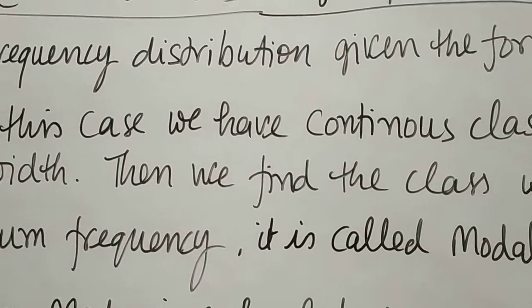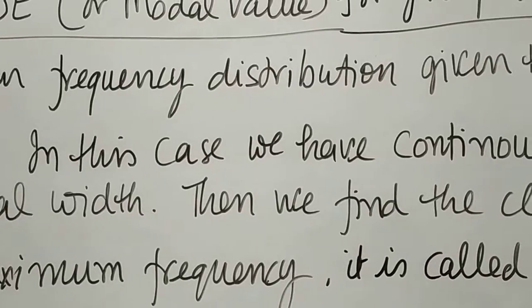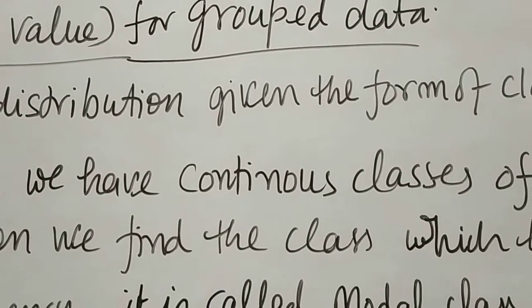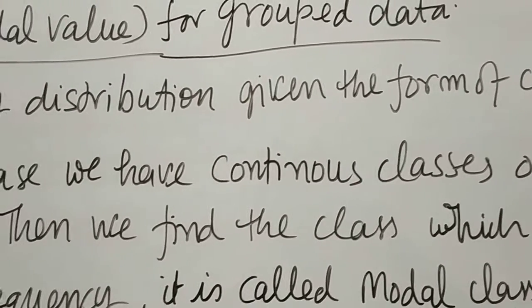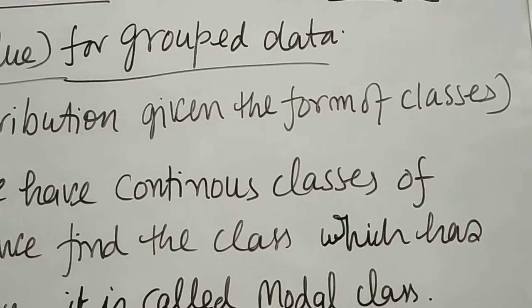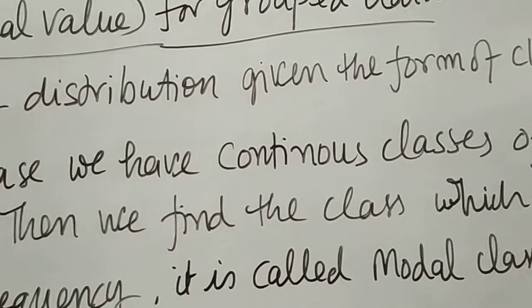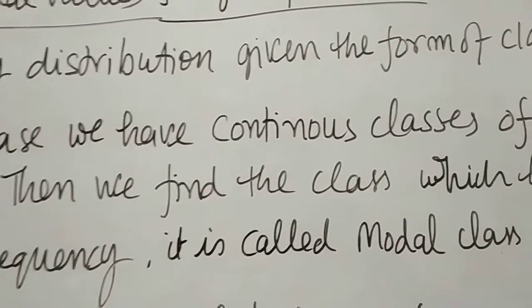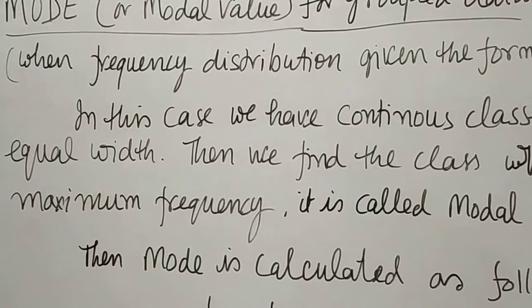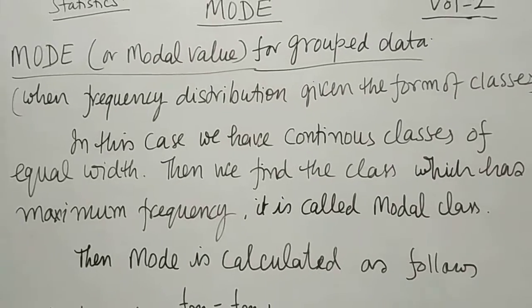In this case we have continuous classes of equal width. This is an assumption we have to make - the data in form of continuous classes. If it is given in discontinuous form, we will make it as continuous class. Then we find the class which has maximum frequency, it is called the modal class. When grouped data is given, we will find out the modal class, which is nothing but the class which has maximum frequency.